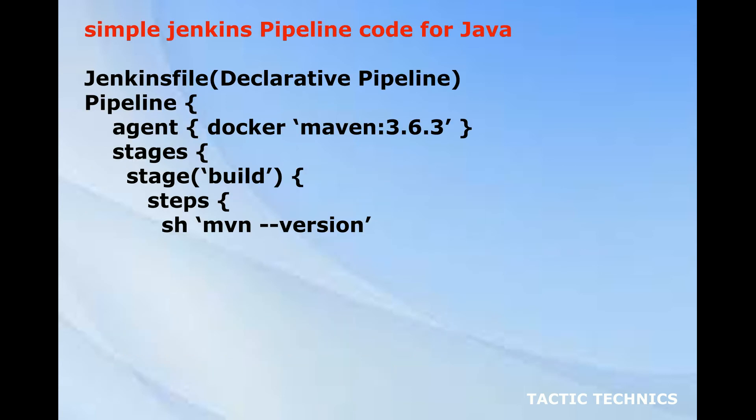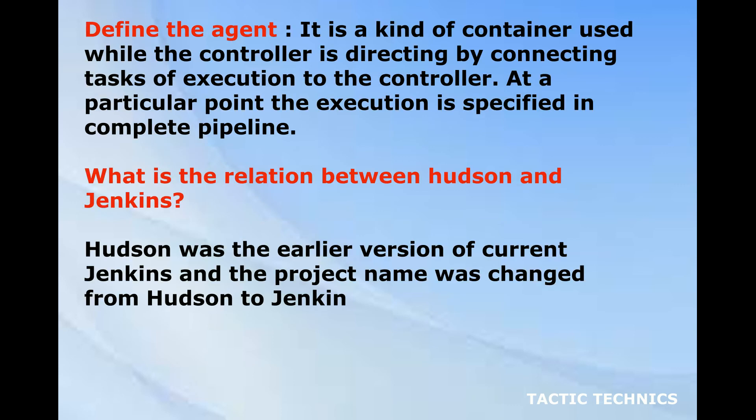Simple Jenkins pipeline code for Java — Jenkinsfile declarative pipeline: pipeline { agent { docker 'maven:3.6.3' } stages { stage('build') { steps { sh 'mvn version' } } } }. Define the agent: it is a kind of container used while the controller is directing by connecting tasks of execution to the controller. At a particular point, the execution is specified for the complete pipeline.